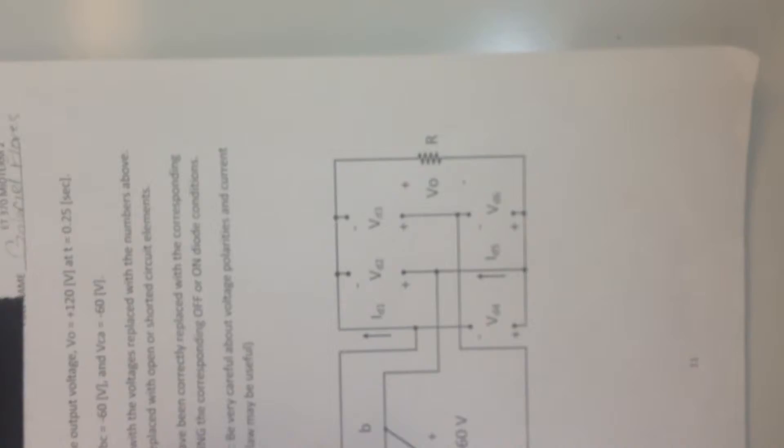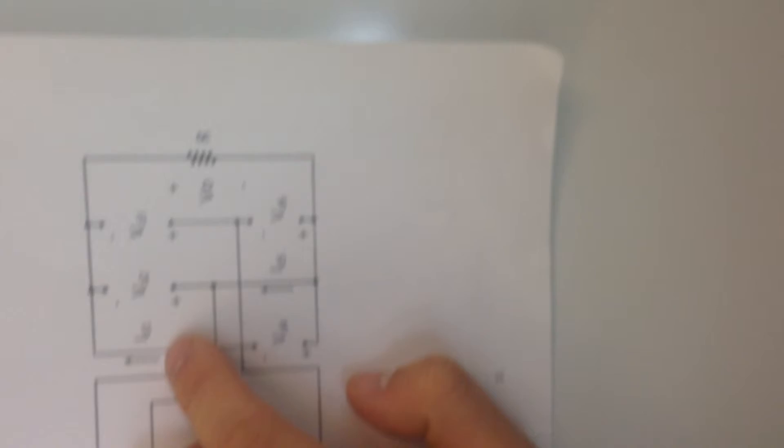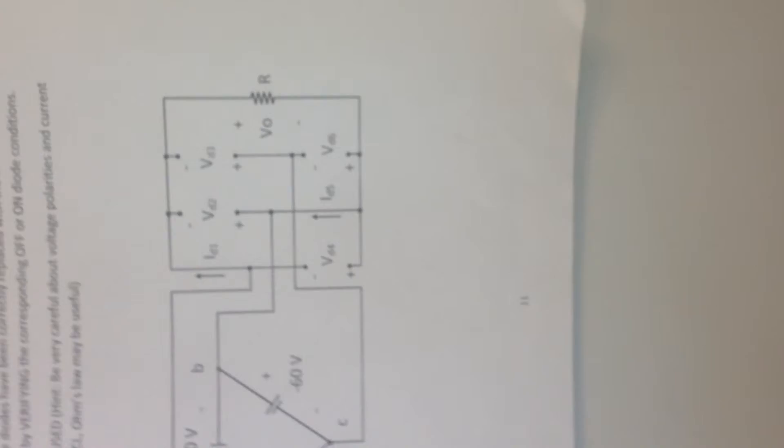So, what the thing is asking for, it's asking to confirm if the output voltage V-naught equals positive 120 volts at time equals 0.25 seconds. And first, we're going to establish the conditions. Now, whenever you have a short, you're going to have zero voltage because it's negligible, it's incredibly small.